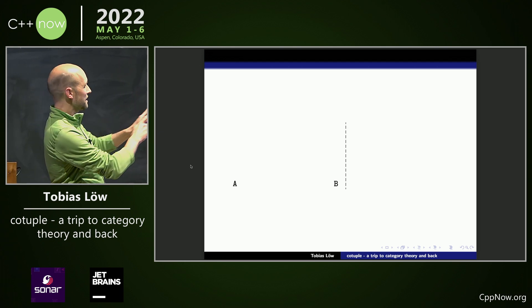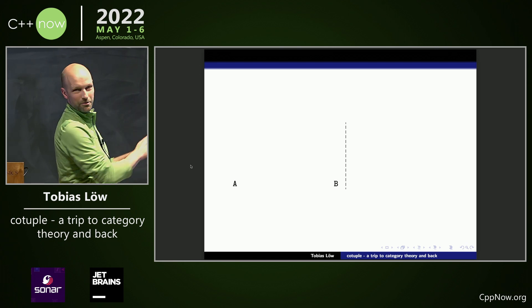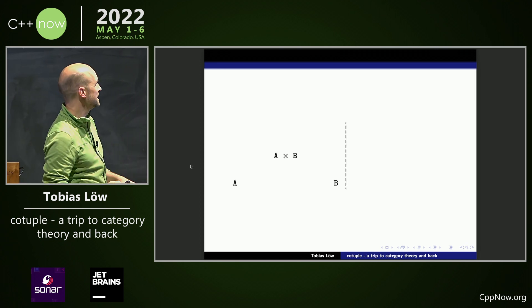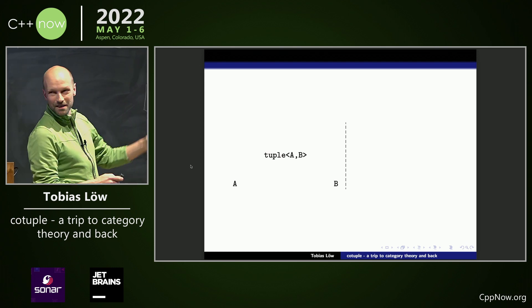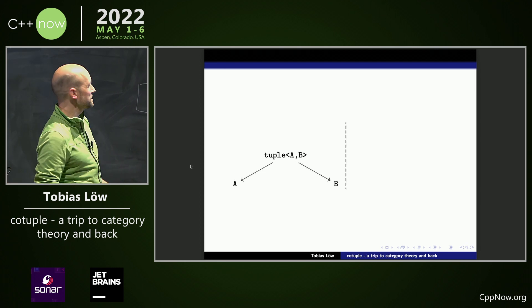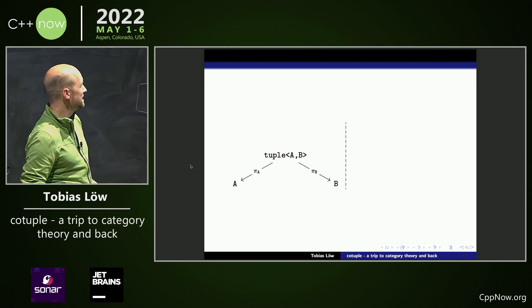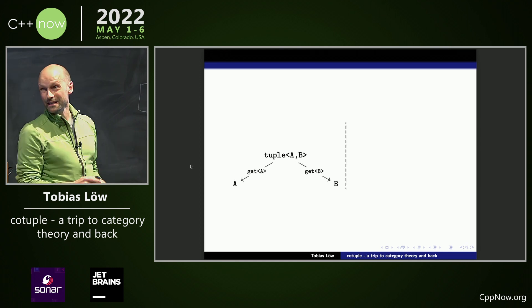Let's start with types A and B. Category theorists call this a diagram, even though it's just two things. We can make the product of it, and we call it the tuple of it. It's just the product. With the product, there come two functions or arrows. In category theory, they are the projections. We call them getA, getB.